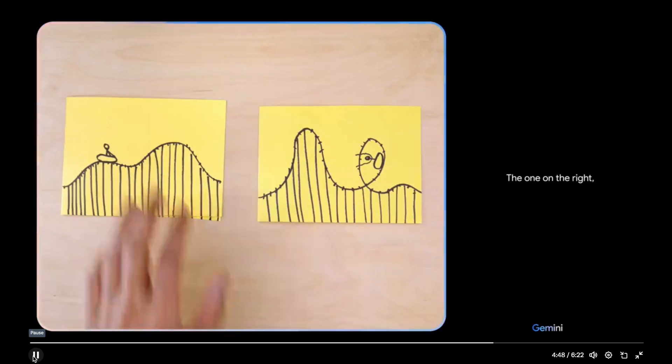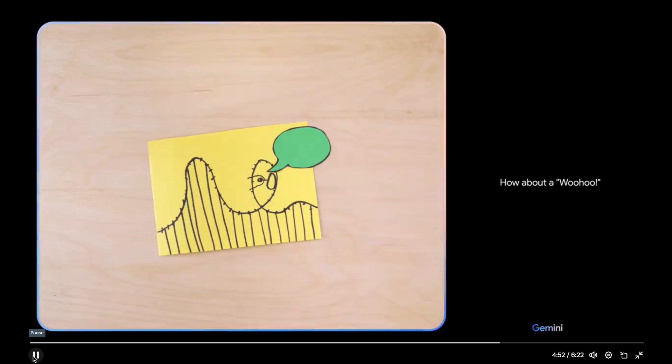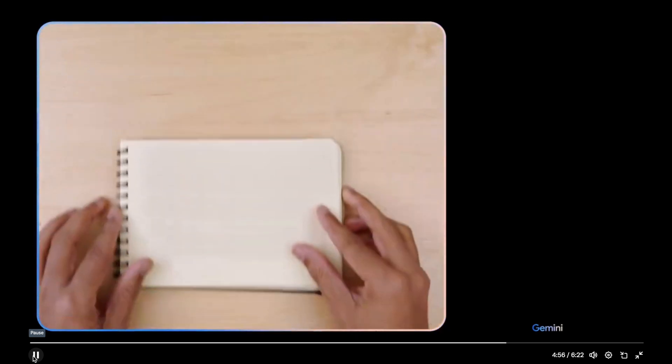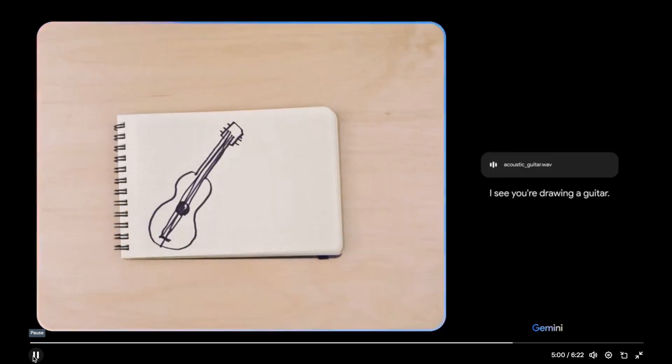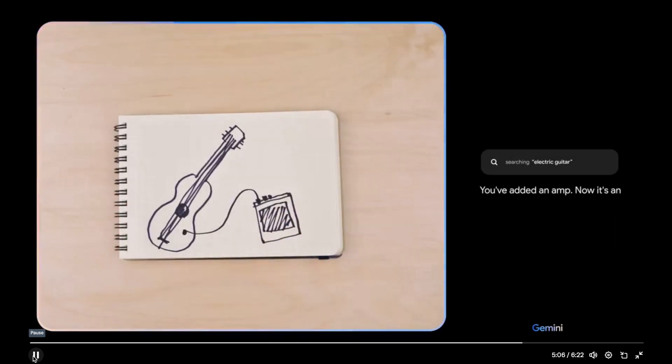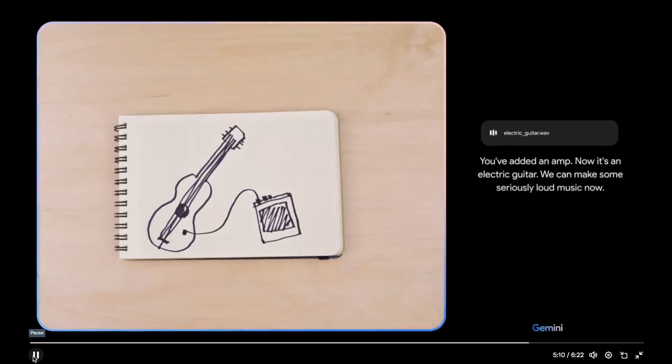Which looks more fun? The one on the right, because it has a loop. What do you think this person might be saying? How about a woohoo? Ooh, I love that. I see you're drawing a guitar. You've added an amp. Now it's an electric guitar. We can make some seriously loud music now.